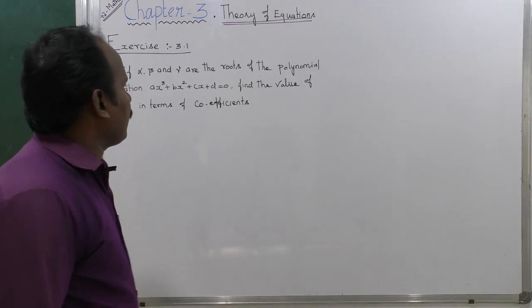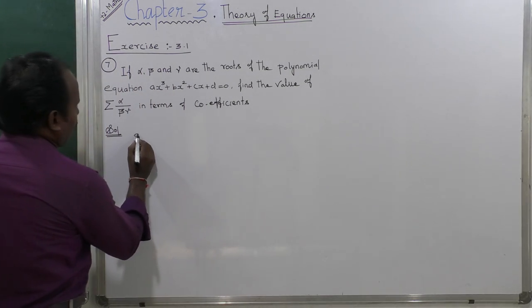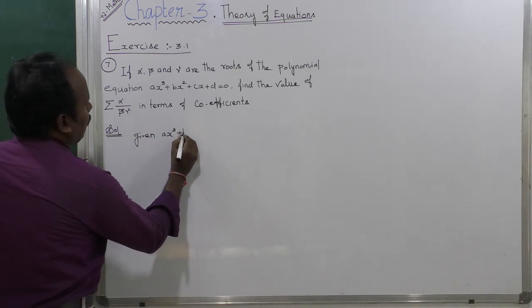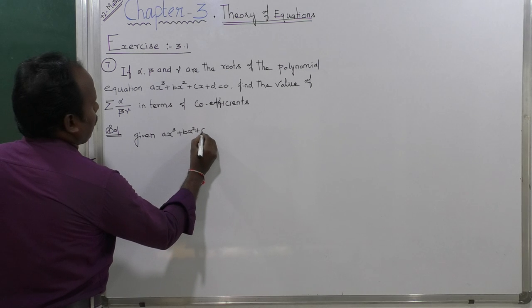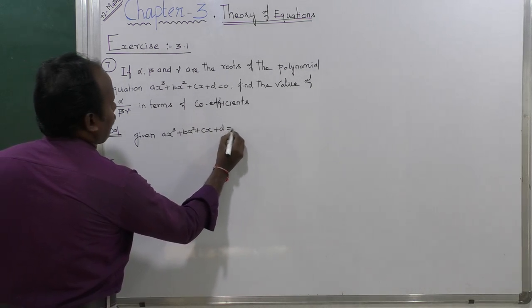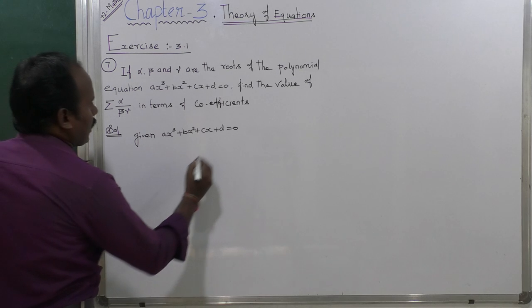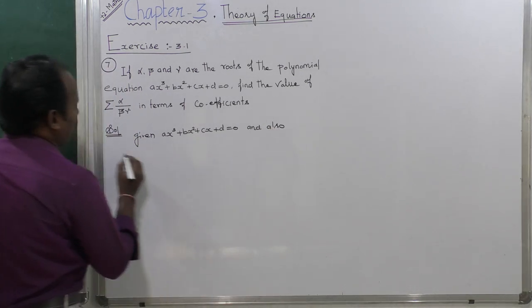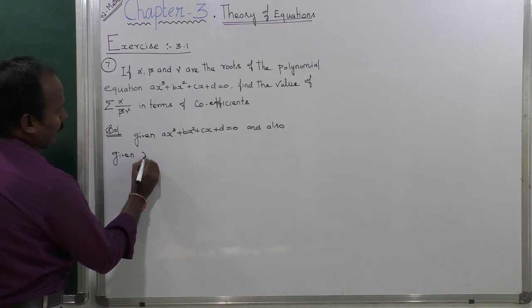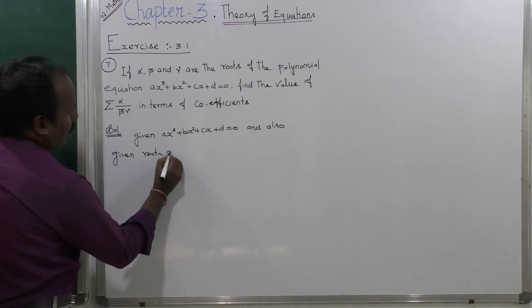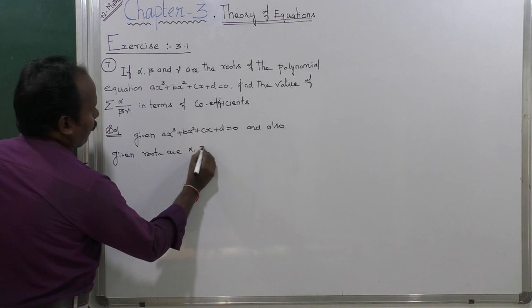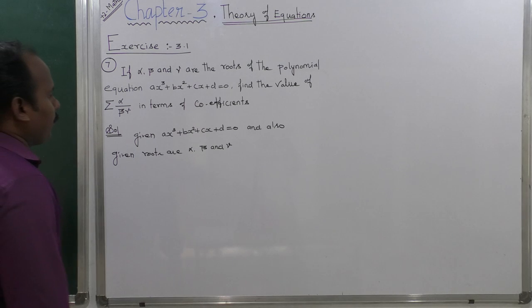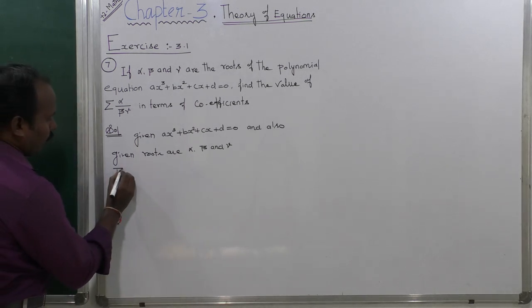Given that ax³ + bx² + cx + d = 0, and also given that the roots are alpha, beta, and gamma.